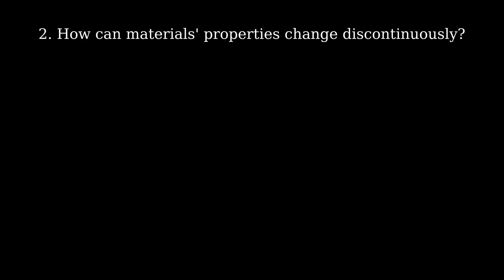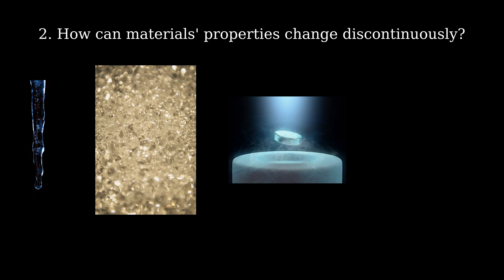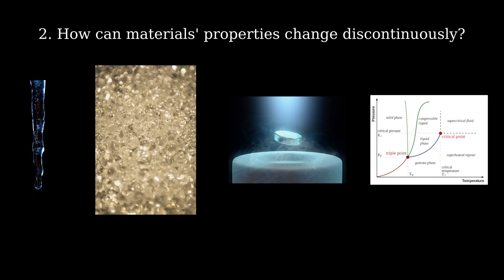The second question I want to try to answer is why the properties of a material can change very suddenly when its environment changes. Ice melts, water boils, metals become superconductors, all at precise and specific temperatures, pressures, or magnetic fields. Why are these boundaries sharp rather than gradual?